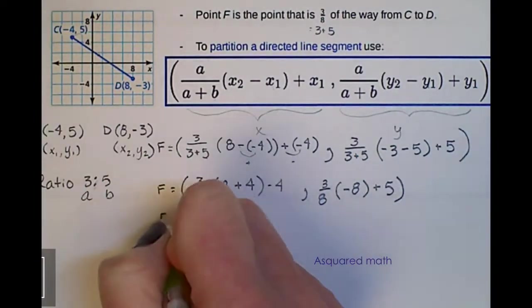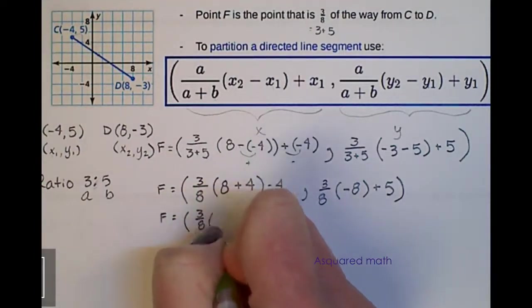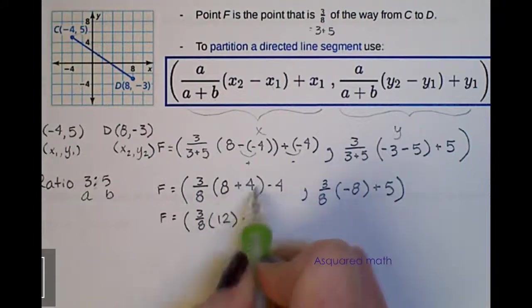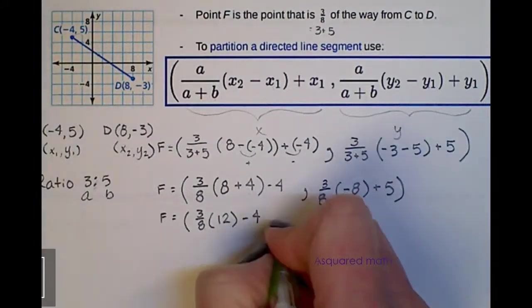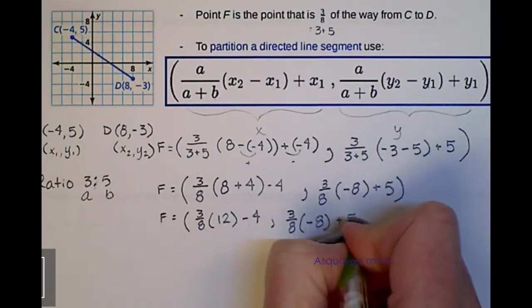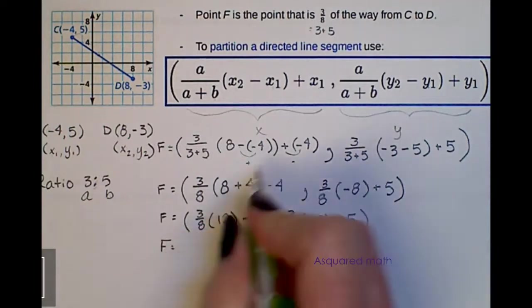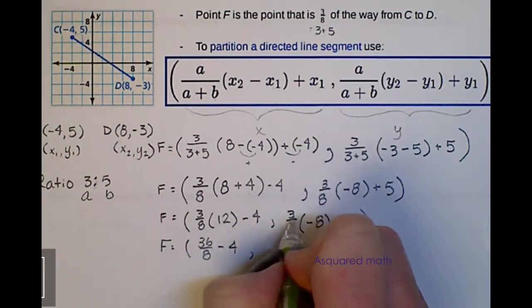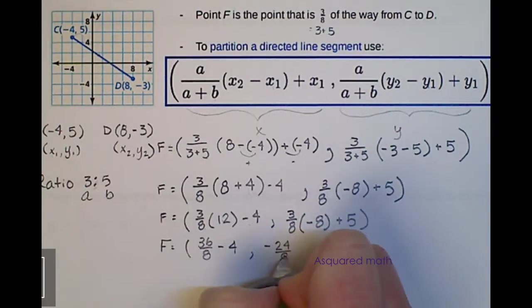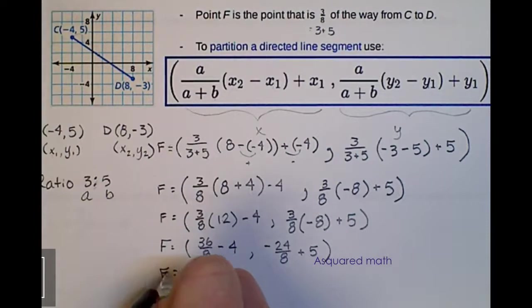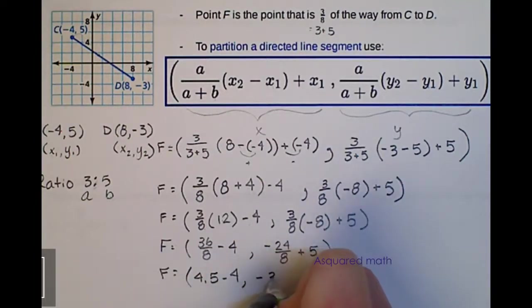Continuing on with the algebra, we now have 3 eighths times 12 minus 4. Don't add these separately. Remember you have to do your parentheses first, and then your multiplication, and then addition and subtraction. And then 3 eighths times negative 8 plus 5. So 3 times 12 gives us 36 over 8 minus 4. 3 times negative 8 is negative 24 over 8 plus 5. 36 over 8 is 4.5. So we have 4.5 minus 4. And then this is negative 3 plus 5.